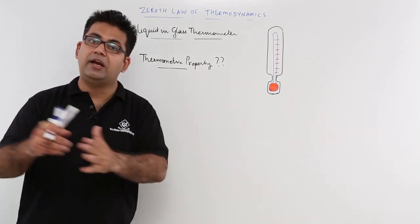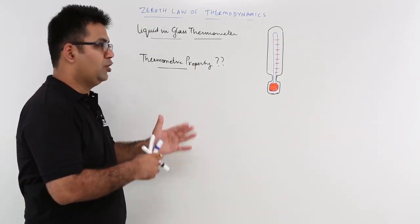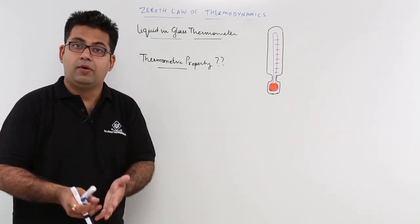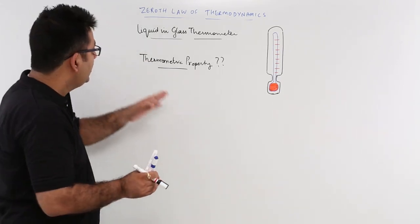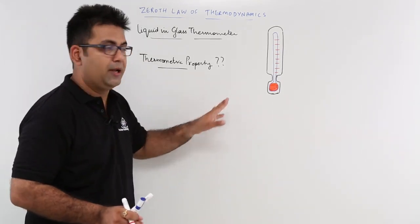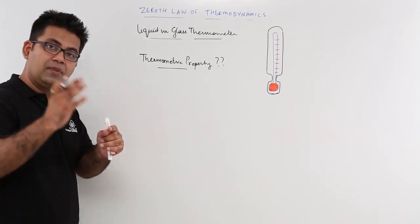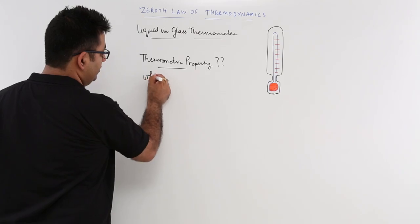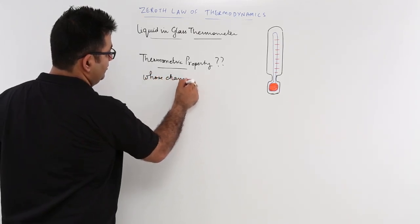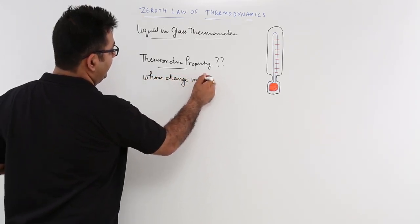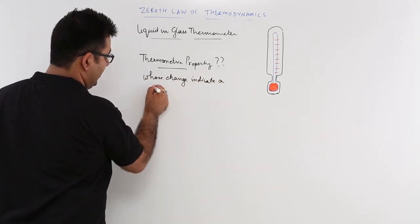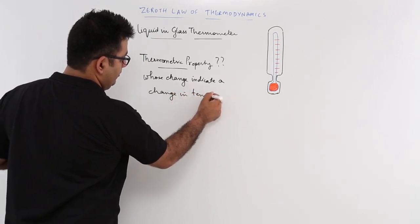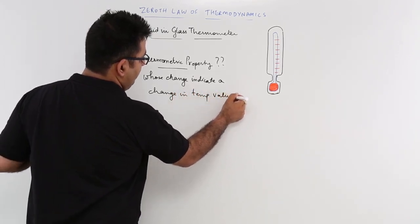Similarly, if you talk about another kind of thermometer like a constant volume gas thermometer, which we talk about in the next video, or a thermocouple, every thermometer will have a different thermometric property. So, thermometric property is that property or value whose change indicates a change in temperature value.